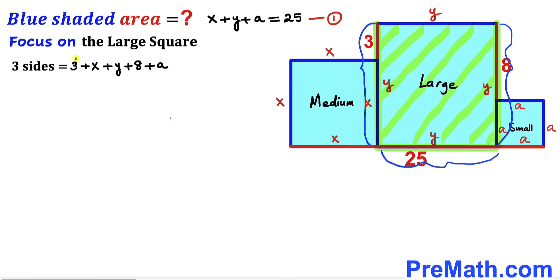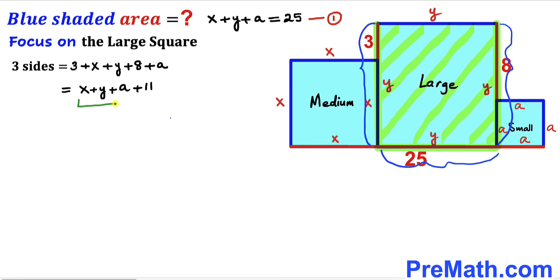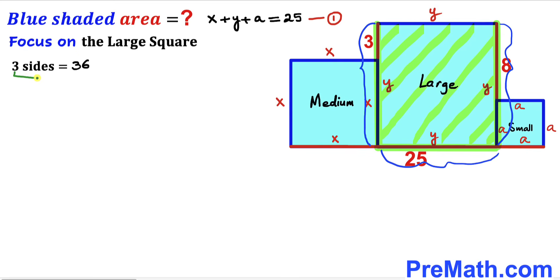Let's combine the like terms: 3 plus 8 gives us 11, so the right-hand side can be written as x plus y plus lowercase a plus 11. From equation one we know x plus y plus lowercase a equals 25, so substituting gives us 25 plus 11, which equals 36. The sum of these three sides of the large square turns out to be 36.